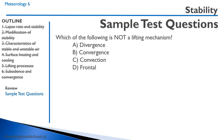Practice question: Which of the following is not a lifting mechanism? A — divergence. B — convergence. C — convection. D — frontal. Divergence is not a lifting mechanism; divergence causes subsidence, where the air is moving down and out. Convergence, at a low-pressure area, brings air from surrounding areas to the center and then moves it up — so that's a lifting mechanism. Convection is hot air rising. Frontal is a cold air mass pressing under a warm air mass and forcing it up. So the correct answer is A — divergence is not a lifting mechanism.